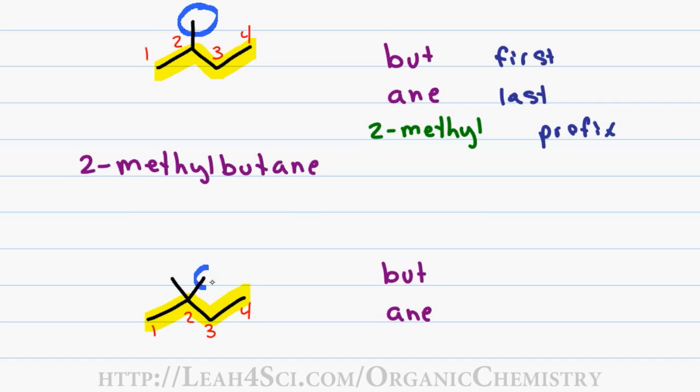And now I have 2 substituents both coming off of carbon 2. Since the substituents are the same, they're both methyls, I write 2,2-dimethyl. The reason I include two number 2s is that both substituents are on number 2 and the di tells me that there's 2 of the methyl group. You have to include both the numbers and the di, this way I know how many I have and exactly where each one shows up.